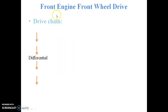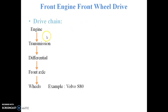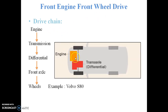The next type is the front engine front wheel drive. In this case, the engine is mounted at the front position and the drive is transmitted to the front wheels only. The power is first transmitted from the engine to the transmission system, then from the transmission system to the differential, and from the differential to the front axle and then to the front wheels.